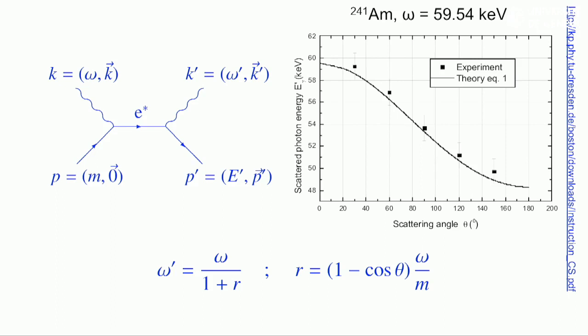The kinematics of the process is characterized by the energy omega of the incident photon and the scattering angle theta, the angle between k and k prime which are the four momenta of the incident photon and the outgoing photon respectively.